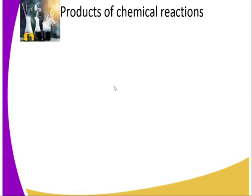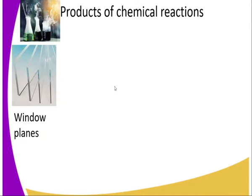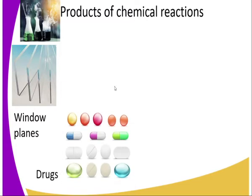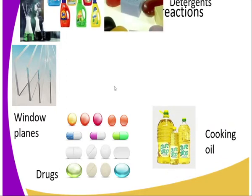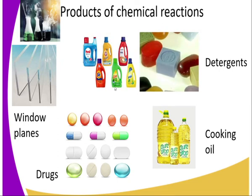It is important for us to understand the products of chemical reactions because they are very important. For example, we have window prints used for construction, drugs used to treat or mitigate diseases, cooking oil, and detergents — all results of chemical reactions. Remember, even cooking involves chemical reactions, so we don't eat raw food.